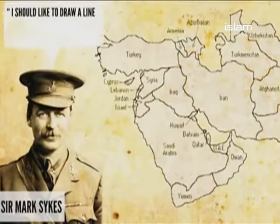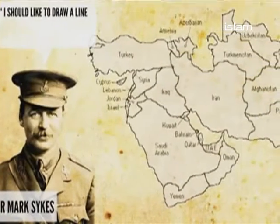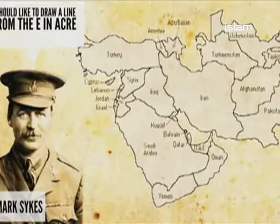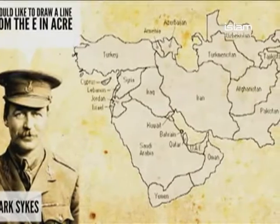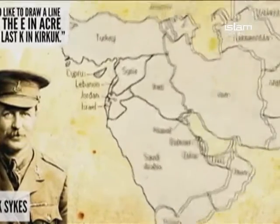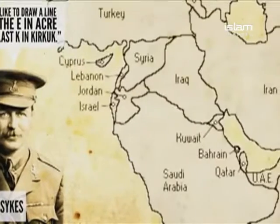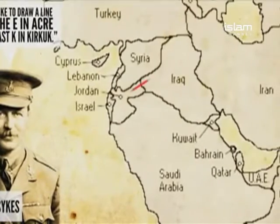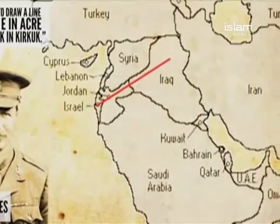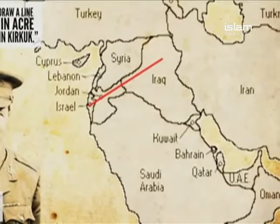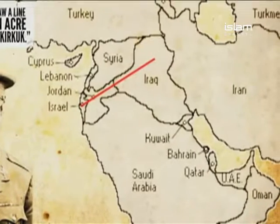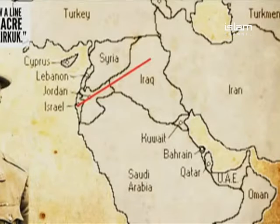They were also very worried about the Ottoman Sultan's appeal to jihad — he had called for a holy war against the British, French, and Russians — and they wanted to undercut that appeal. But at the same time they had done a deal with their French and Russian allies to carve up the Middle East: the secret Sykes-Picot Agreement. And simultaneously they were in negotiations with the international Zionist movement, committing themselves to allowing the Zionists to create a Jewish homeland in Palestine.